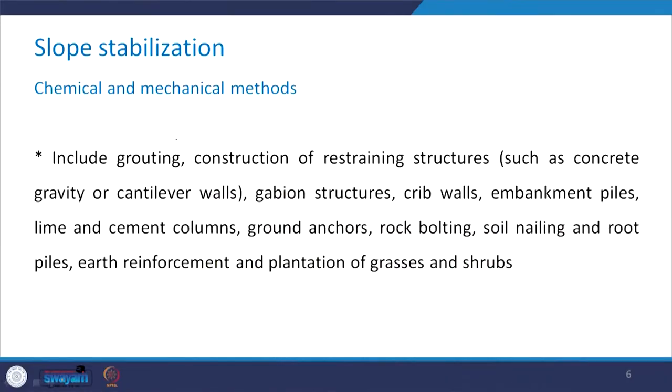The third method is the chemical and mechanical methods, which is very commonly adopted. These include grouting, construction of restraining structures such as concrete gravity or cantilever walls, gabion structures, and crib walls.